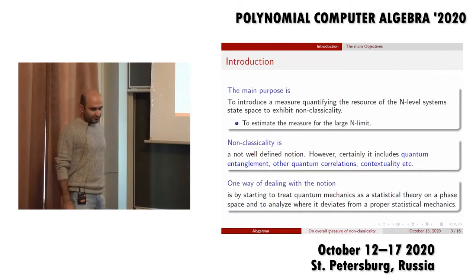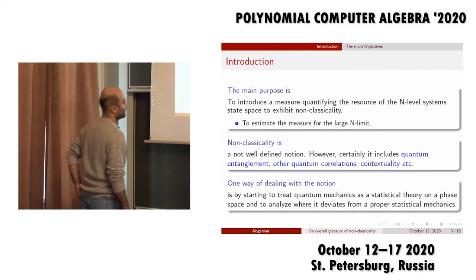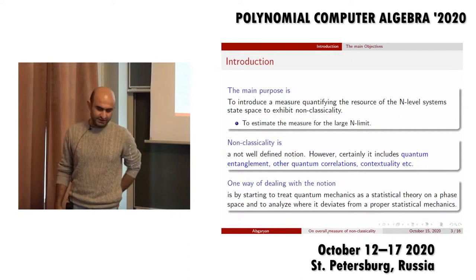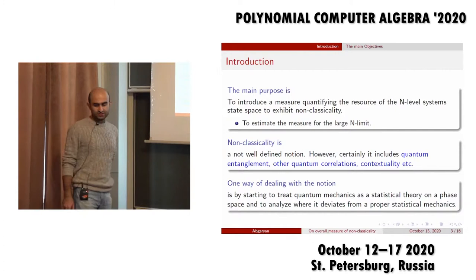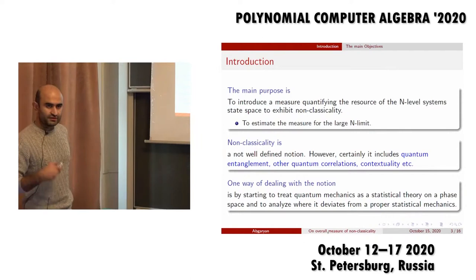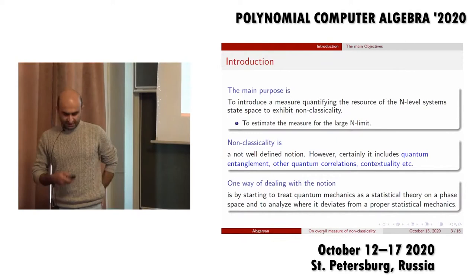However, the best attempts — the first was made by Wigner himself — showed that in the best case scenario, where you describe your system by probability density functions, these probability density functions are going to have negative values, which is intractable from the point of view of probability. So we want to base our notion of non-classicality on this very feature of having negative values for probability density functions.